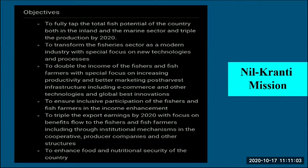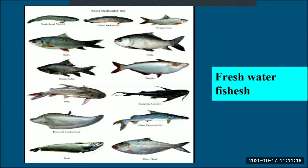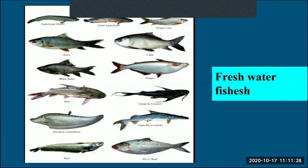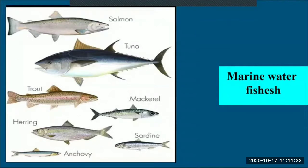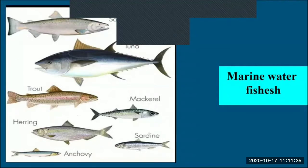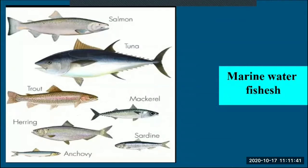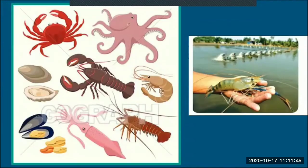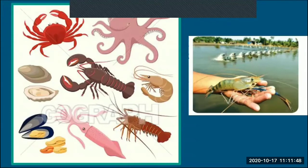The mission aimed to triple export earnings by 2020 with benefits flowing to fishers and fish farmers through institutional mechanisms like cooperatives and producer companies, and to enhance food and nutritional security. Examples of freshwater fishes include Catla, Rohu, and Mrigal, while marine water fish examples include salmon, tuna, trout, mackerel, herring, sardines, and cod. Shrimp and lobster are also part of aquaculture.